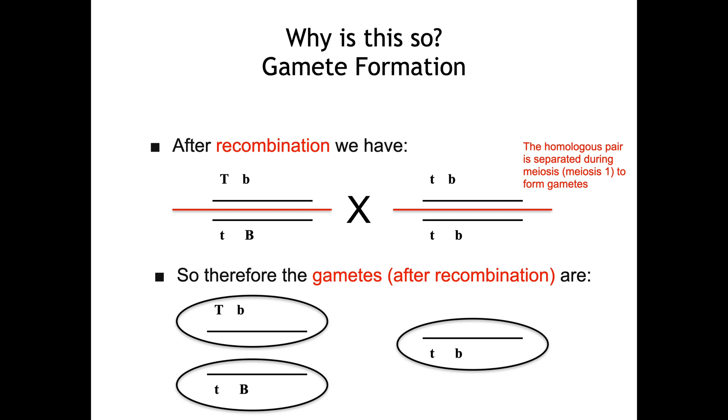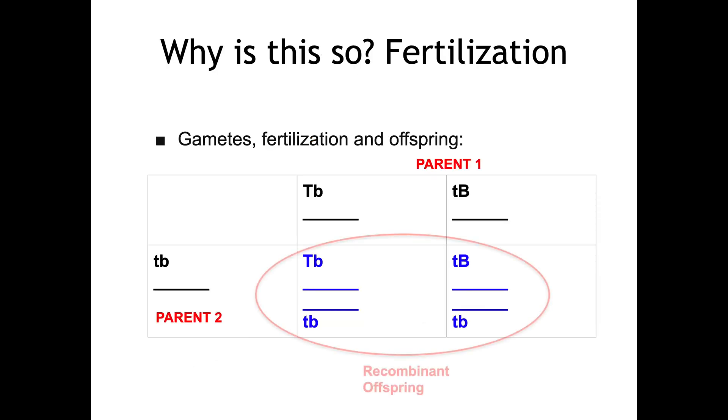But since the task is to identify the recombinants, these are really the only two that we need to pay attention to. So then we go through our Punnett square and those are the recombinant offspring, exactly the same as before. They are formed from fertilization as a result of Parent 1 and Parent 2's gametes.